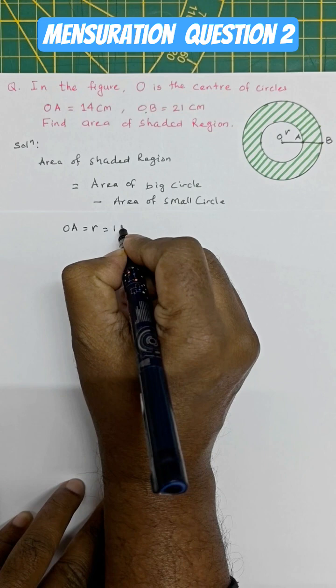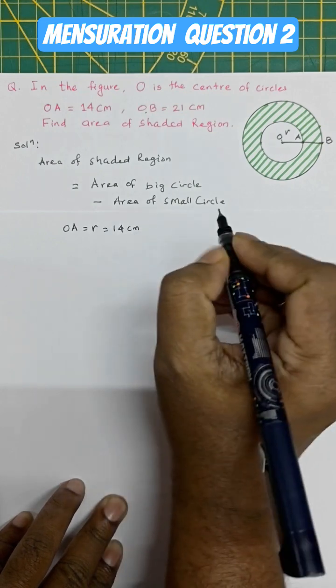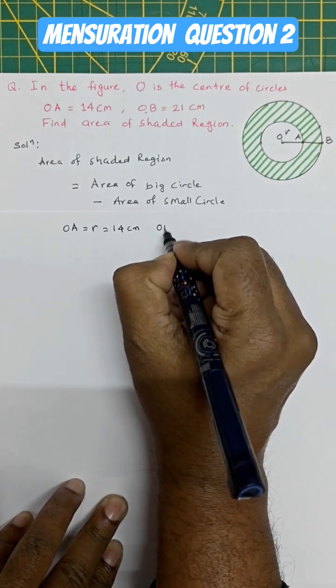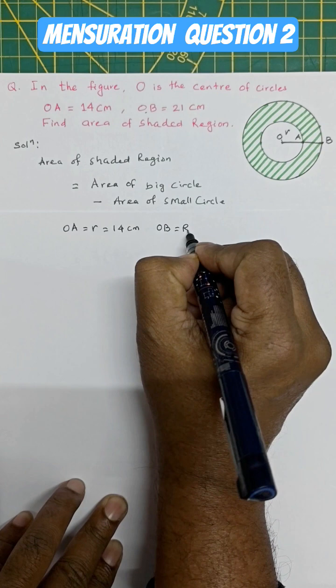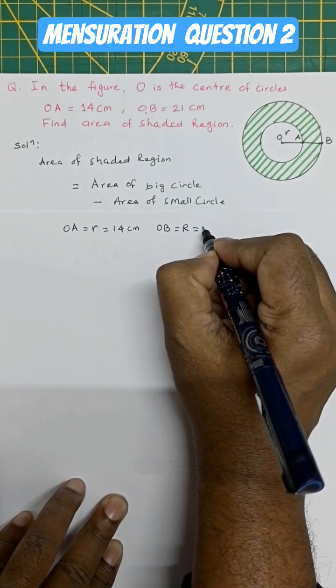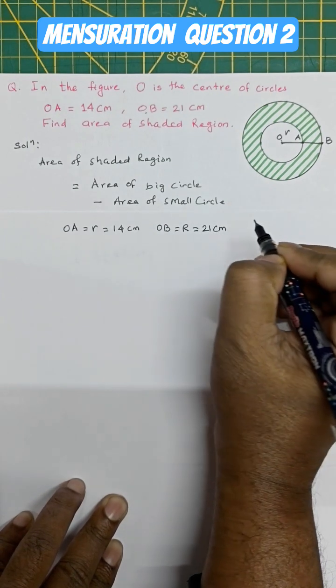r that is given as 14 centimeters and OB is R, that is 21 centimeters.